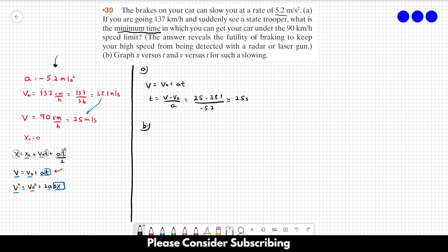For letter B, we have to graph X versus T and V versus T for such a slowing. So one thing that will help us is that if we find the distance that the car traveled during this 2.5 seconds, so we have to find delta X over here. So V squared is equal to VO squared plus 2 times A delta X. So delta X is equal to V squared minus VO squared divided by 2A. So the final speed is 25. The initial speed is 38.1. Don't forget to square it. And the acceleration is minus 5.2. And this gives us roughly 79.6 meters.